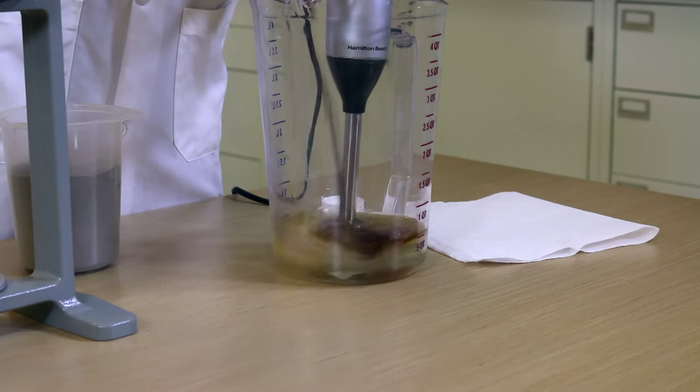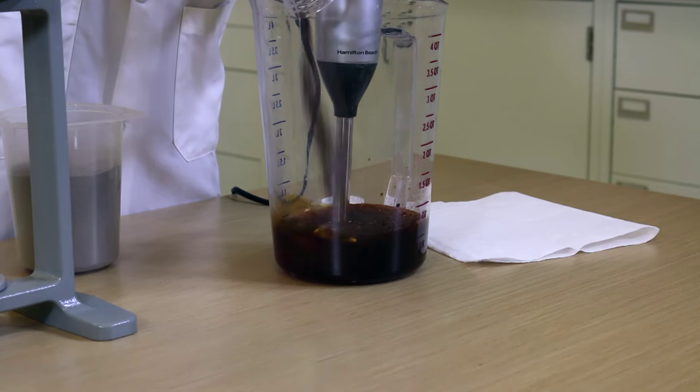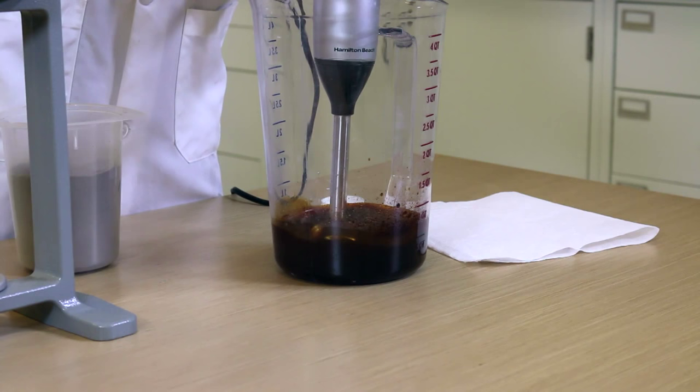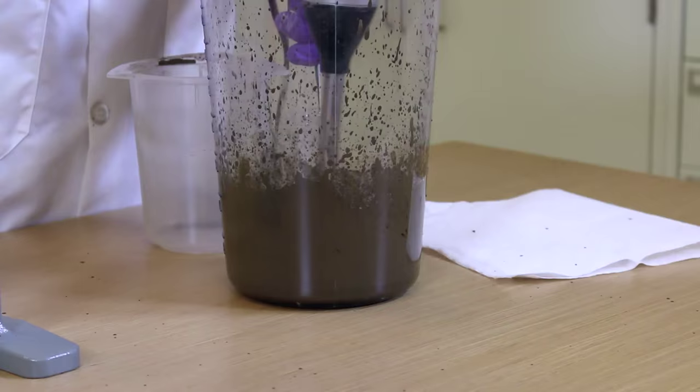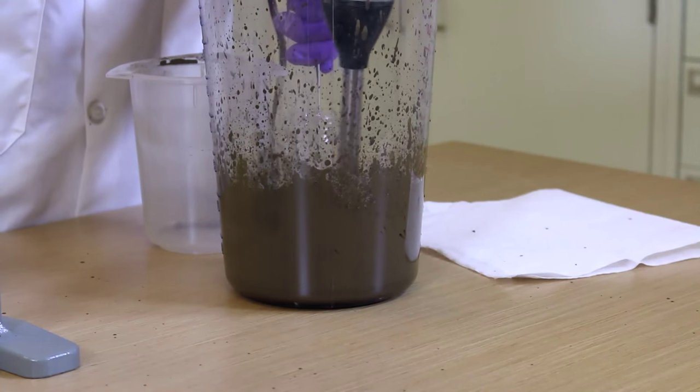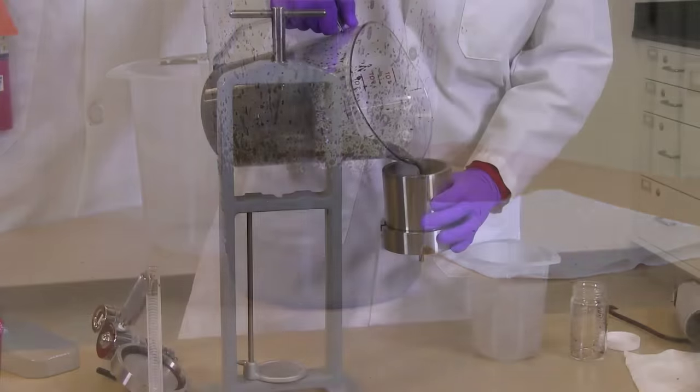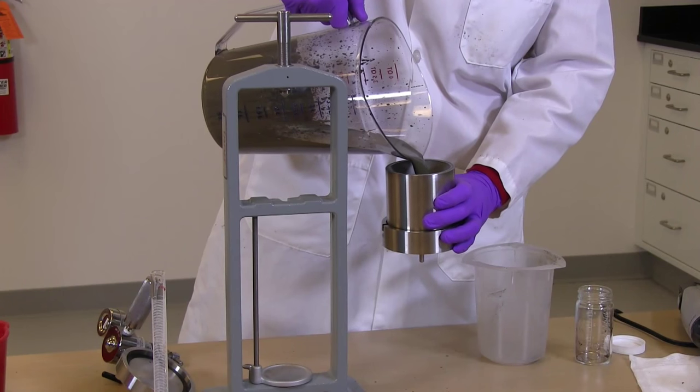Again, we'll take a mixing cup, water, and first we'll add our additive, Bayrad 658. As we get this mixed, we'll add the cement. Again, we'll take our filter press, filter press cell, and add the cement slurry and set it to 100 psi.